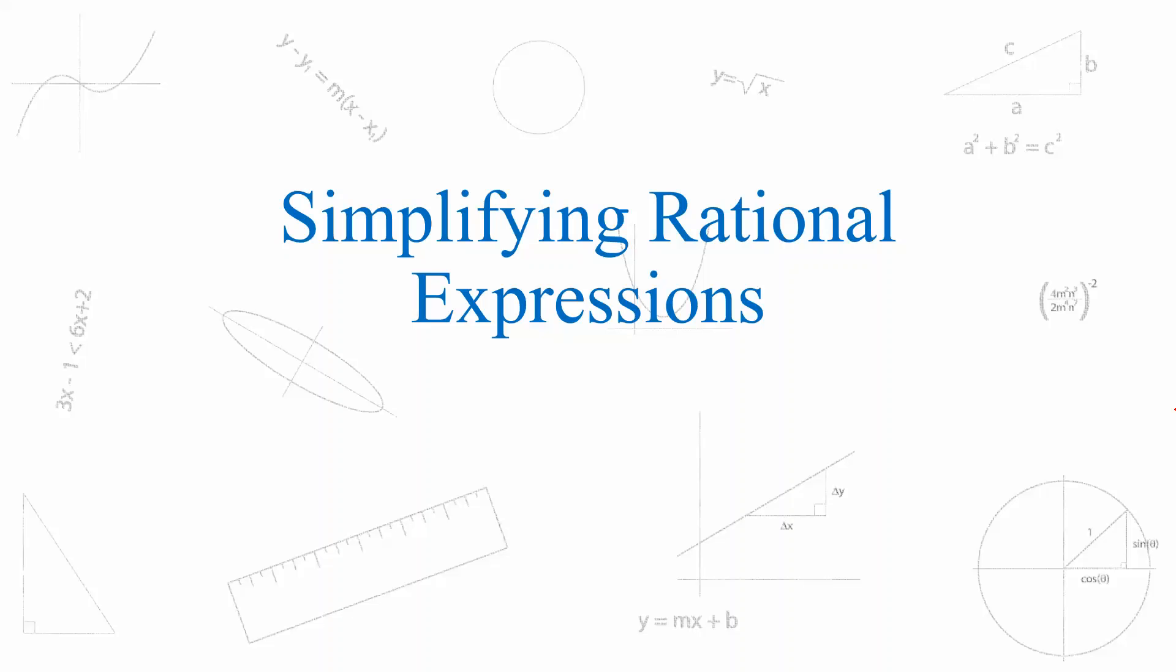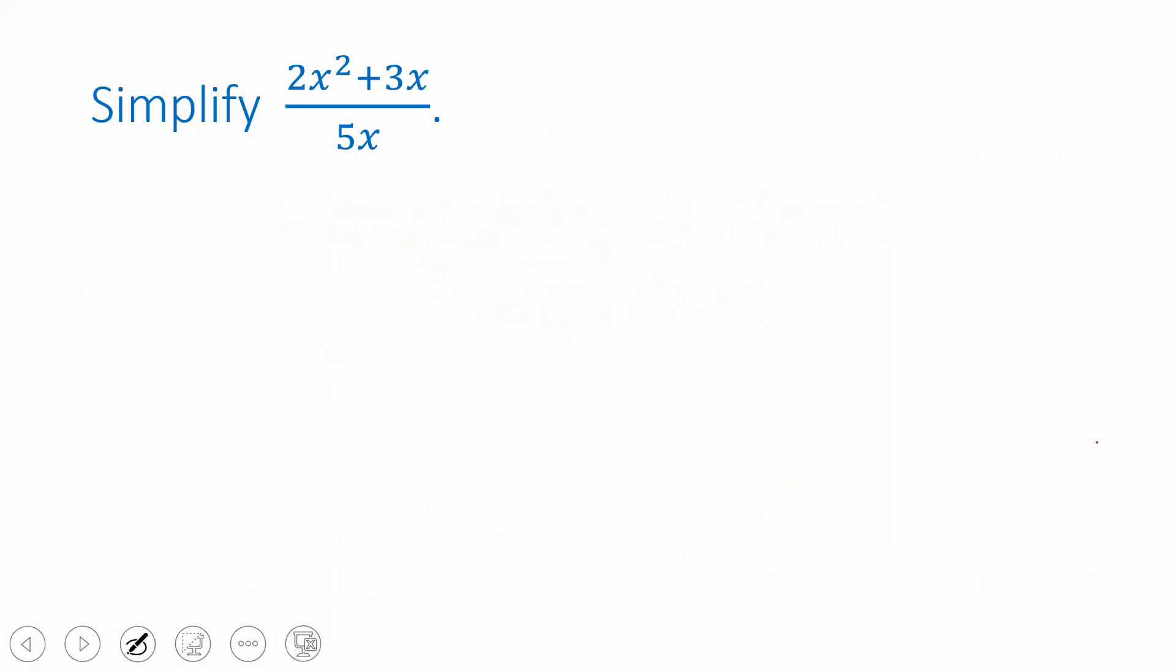A rational expression is one polynomial divided by another polynomial. For example, take a look at this one: 2x squared plus 3x, that's a polynomial. 5x is also a polynomial. And so since we have one polynomial divided by another, that's a rational expression.